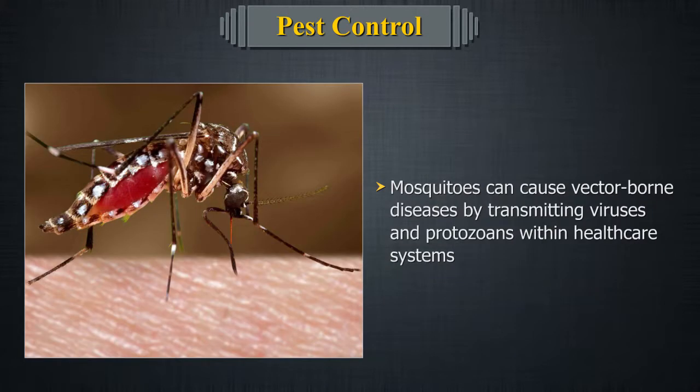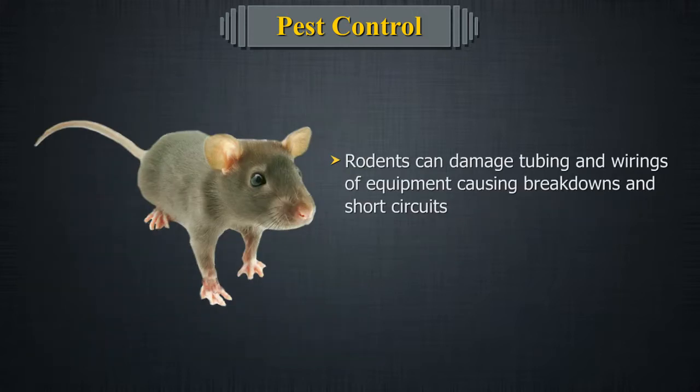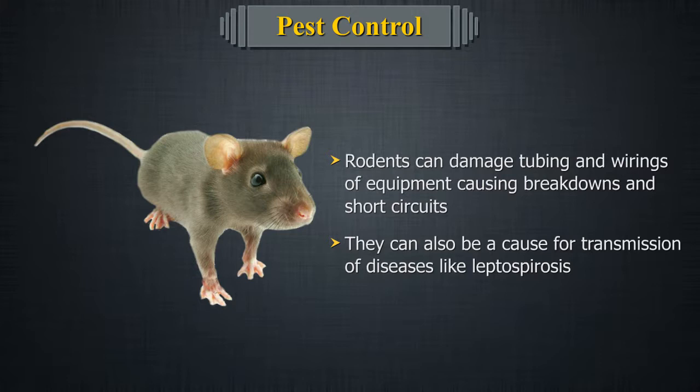Mosquitoes can cause vector-borne diseases by transmitting viruses and protozoans within healthcare systems. Rodents can damage tubing and wiring of equipment, causing breakdowns and short circuits, and can also be a cause of transmission for diseases like leptospirosis.